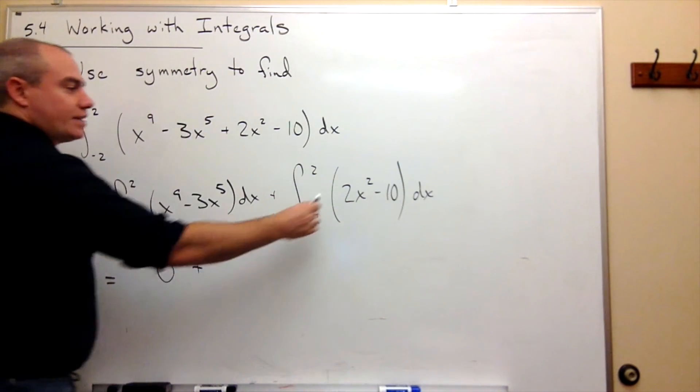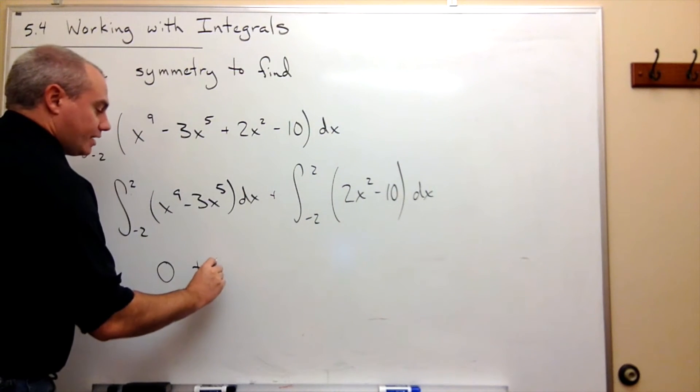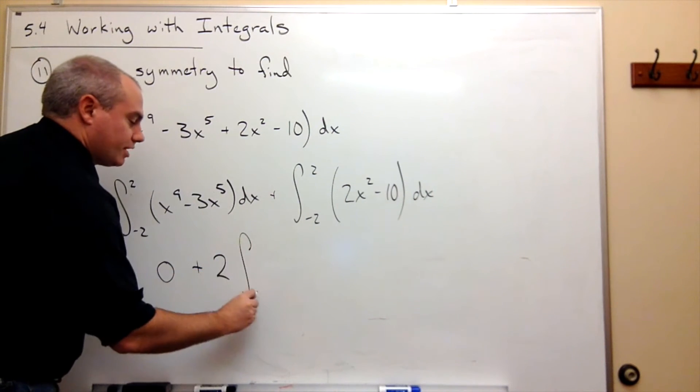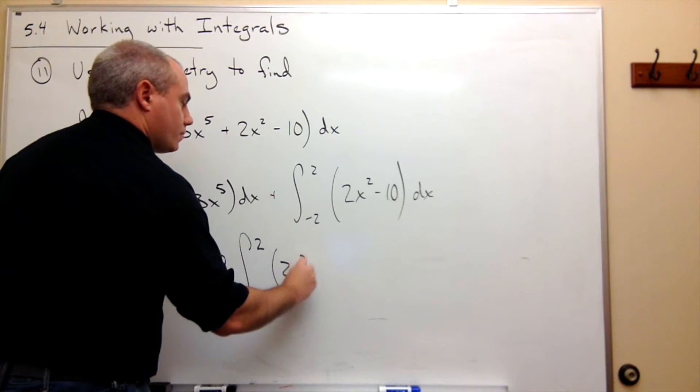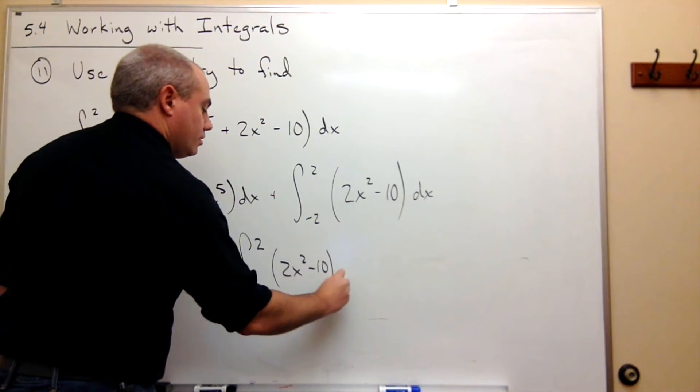And if we want to make life easier on ourselves here, since I know that this is an even function, I can just take 2 times the integral from 0 to 2 of 2x squared minus 10 dx.